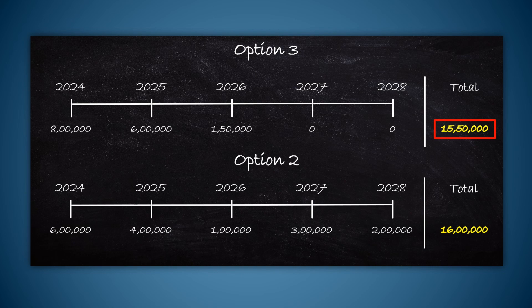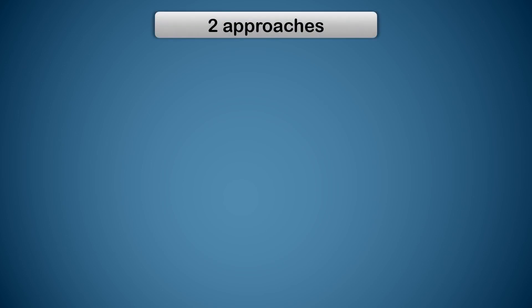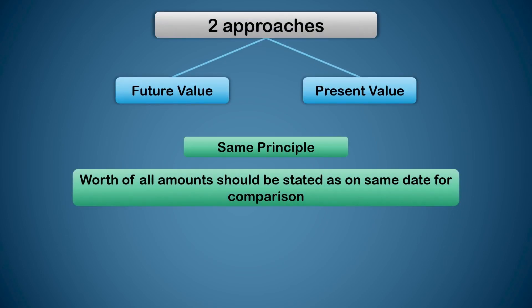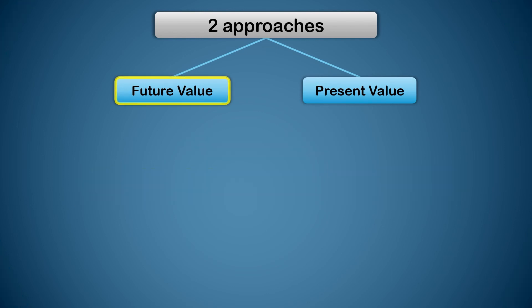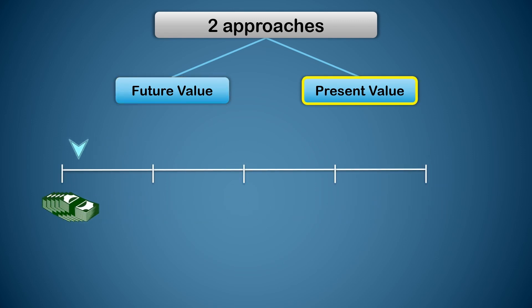There are two main approaches, but the principle in both is the same: we have to find the equivalent of all these amounts as on any one date. Under future value approach, we convert all amounts to values as on the last date. In the present value approach, we convert all amounts to values as on the first date.